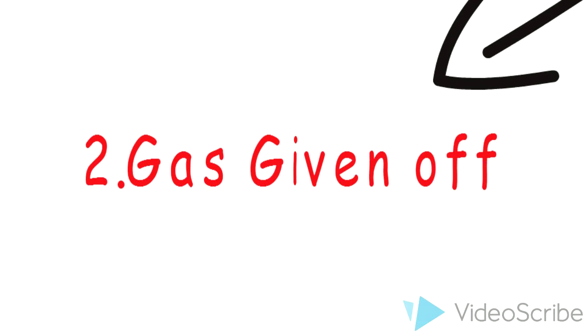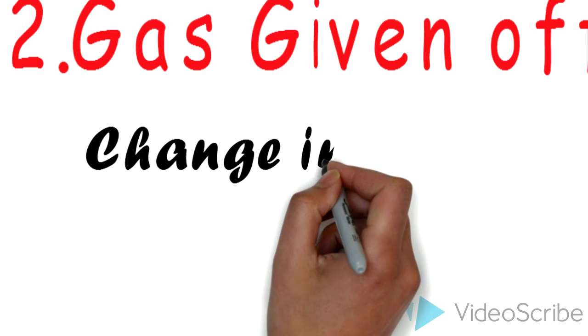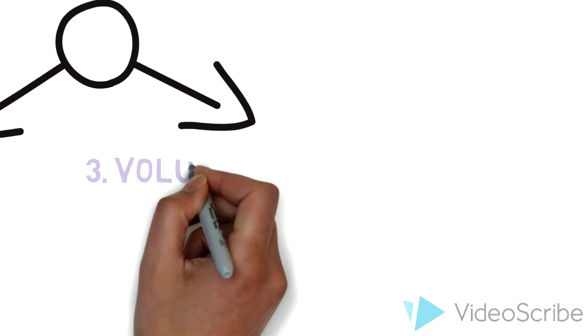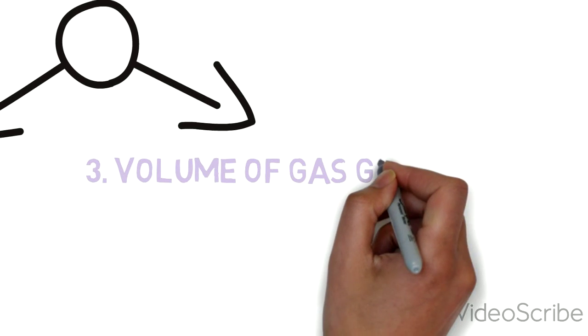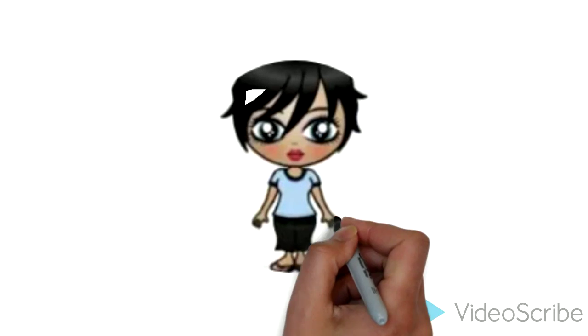In the second one, you're measuring the giving off of gas by measuring the changing mass of the reactants. In the third one, you're measuring the volume of gas that is produced or given off. These are the three main types.